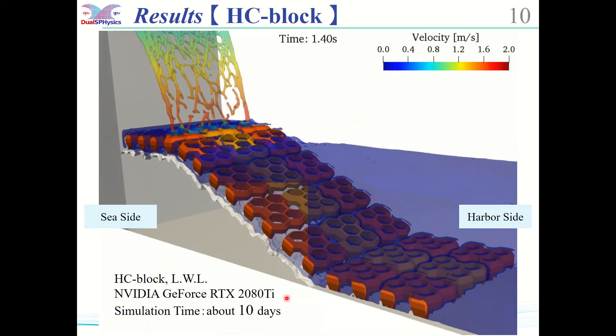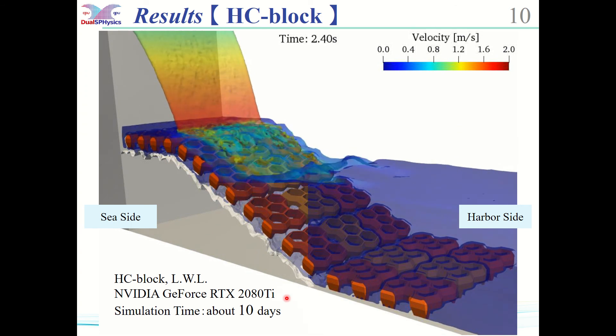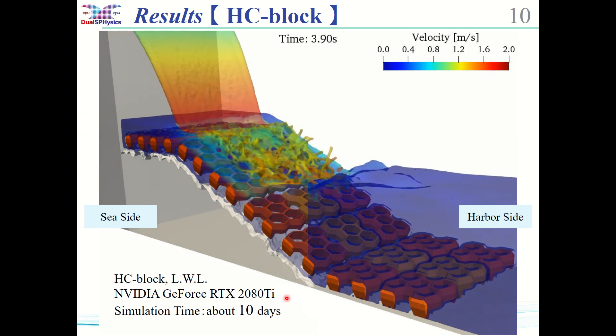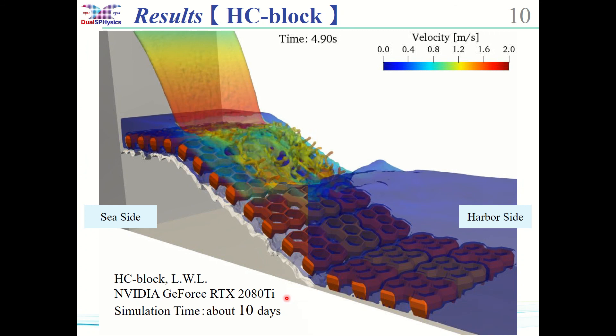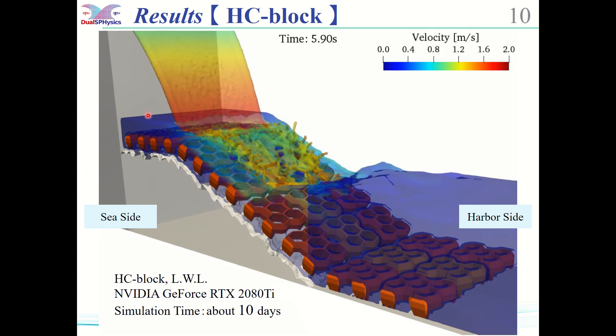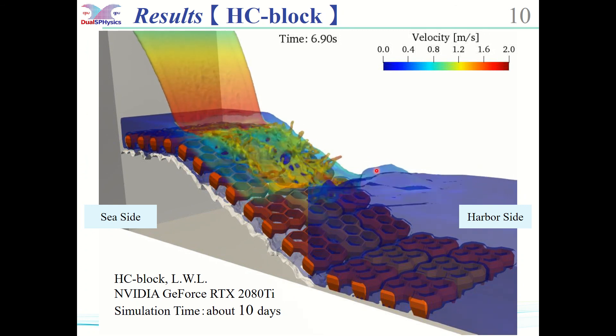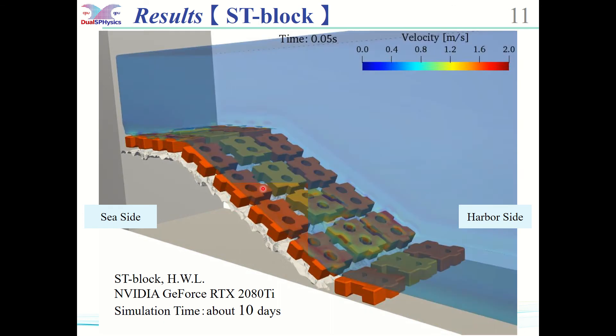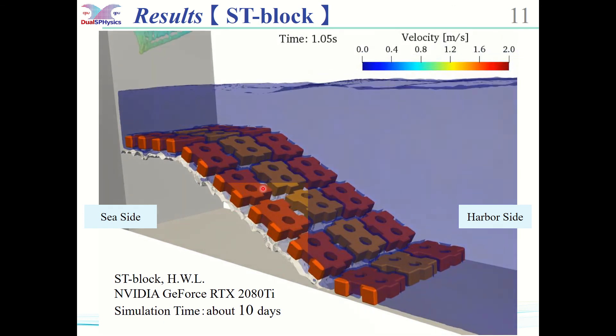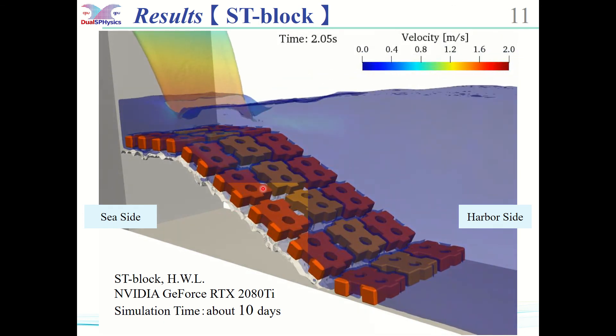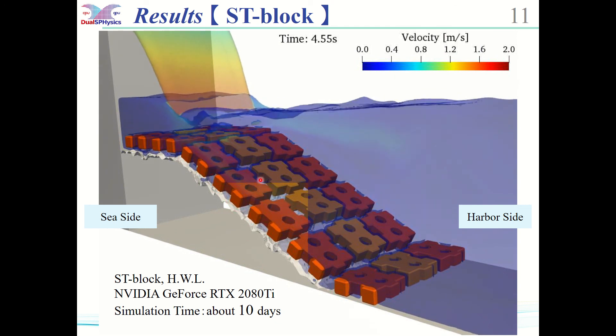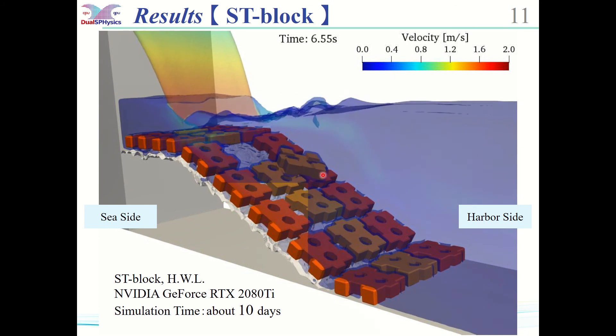This is the simulation result of the HC block under the condition of low water level in the harbor. The block can be seen sliding and then scattering. This is a ST block simulation under the condition of high water level in the harbor. The block does not slide, but scatters. It was confirmed that the scattering process differs depending on the block shape.